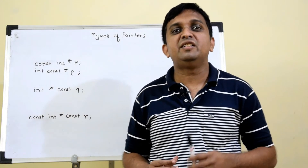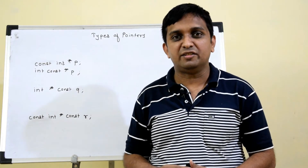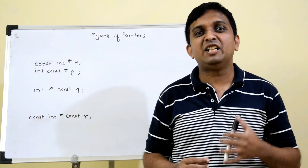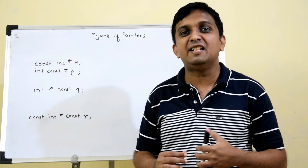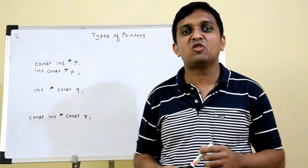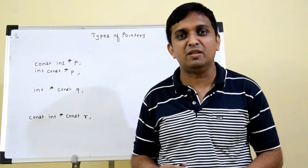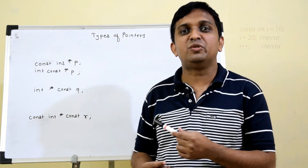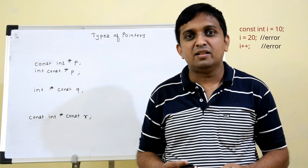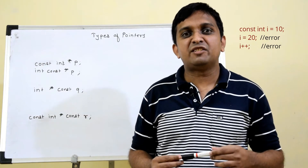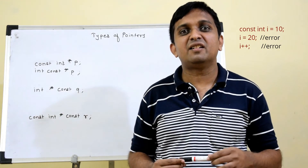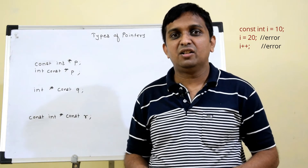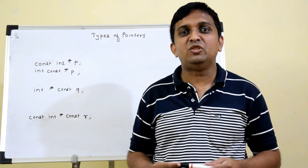In this video we will see different types of pointers which we can declare. You should know the const keyword. In C language, if I declare some variable as a const variable, I cannot change the value of that variable. So if I declare const int i equals to 10, any statement trying to change the value of i is invalid. If I say i plus plus, it will throw an error.